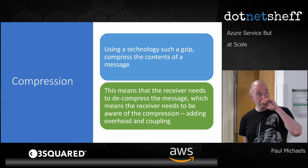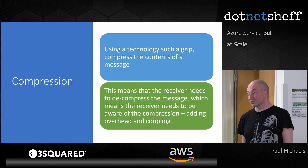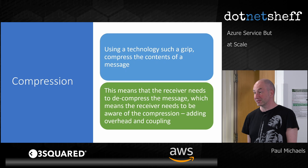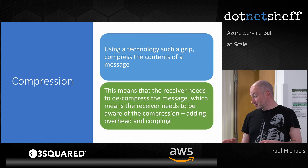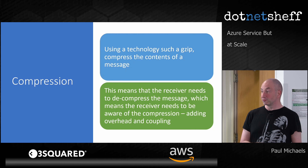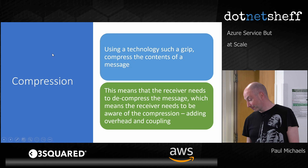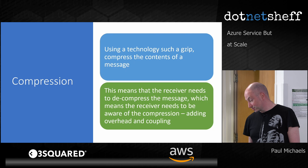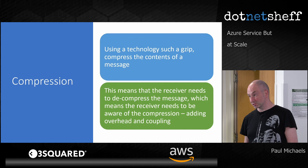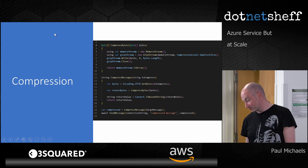Compression — has anybody not heard of GZip or something like that? So you can compress a message and put that compressed message on the Service Bus. The downside is that the consumer of that message has to know that you've compressed it, and obviously there's some processing overhead in decompressing it. But it generally works fine — text compression works okay. Also, if you use it on too small a message, it'll actually make it bigger. If it's like 10 characters, it might make it a bit bigger because of the overhead of compressing it.